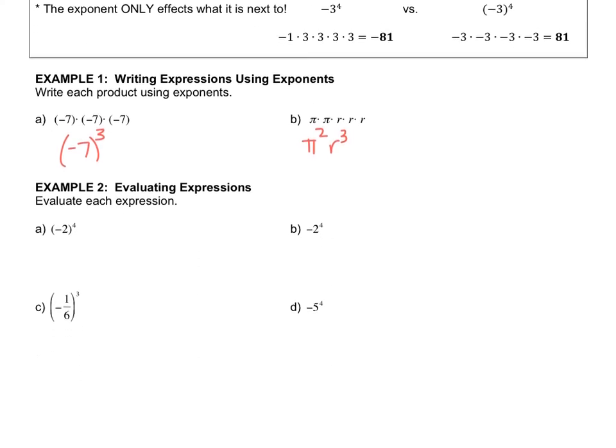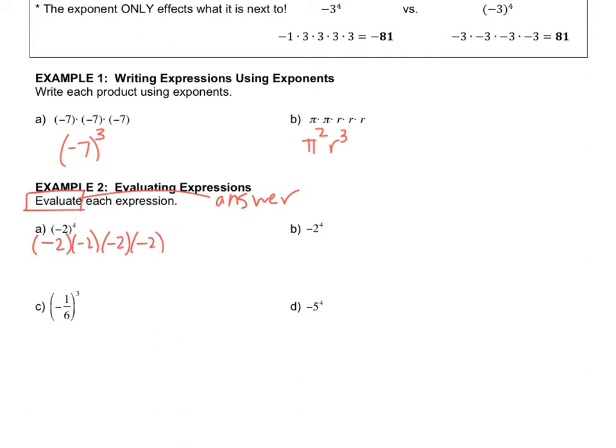Evaluate is another word for find the answer. So what they're looking for is the number answer to these questions. So negative 2 to the 4th means negative 2 times negative 2, right? We're going to use it 4 times. So that gives you a final answer of 16. Letter B just means negative 1 times 2 to the 4th, which gives us negative 16.